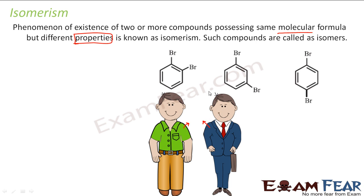Similarly here, you have compounds which have the same molecular formula — the constituents of the person are the same, the same molecular formula — but the behavior is different, the properties are different. So if you see these three, they all have the same molecular formula but different properties. And these are called isomers.